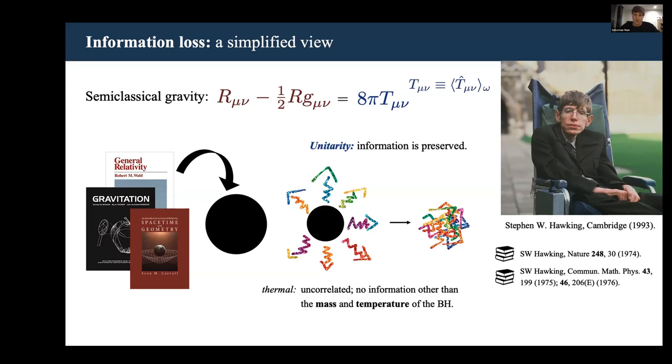Maybe a more technical way to phrase this problem is to say that if during the evaporation process, the quantum correlations are not restored between the inside and the outside of the horizon, then an initially pure state will have evolved into a mixed state, and this implies loss of information.